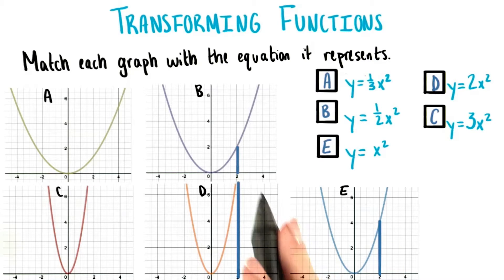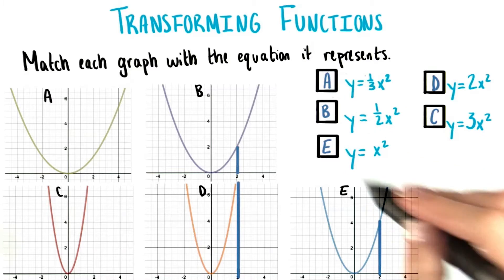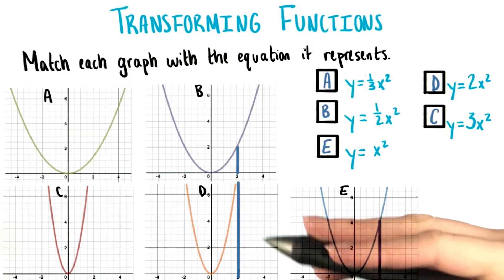But what determines if a graph is stretching, like in graph D, or shrinking, like in graph B? Remember, this is in the y direction, the vertical direction. Something clearly has to happen in their equations to make this happen in their graphs.